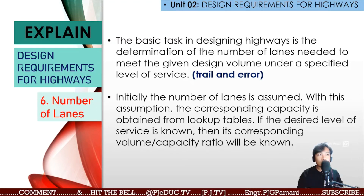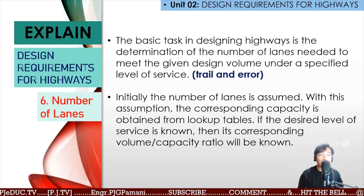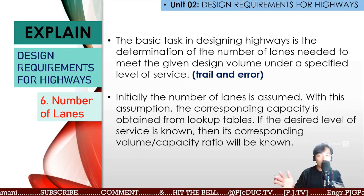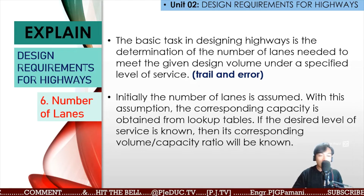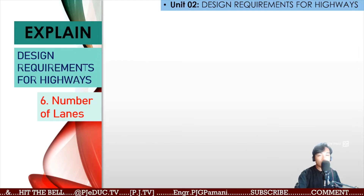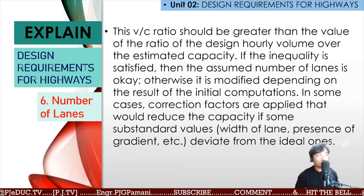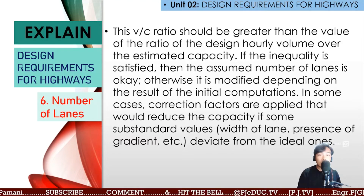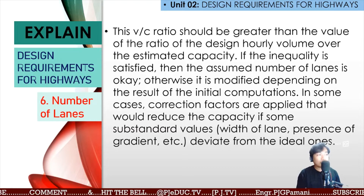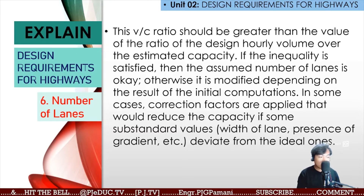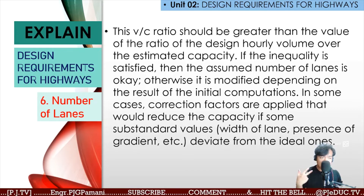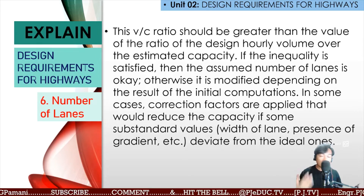We determine how many vehicles can pass on that road — your volume-capacity ratio — how many can pass within a specific day, within an hour (vehicle per hour or vehicle per day). The volume-capacity ratio should be greater than the ratio of the design hourly volume (DDHV or DHV) over the estimated capacity. Estimated capacity is the standard value for two-lane two-way, four-lane two-way, six-lane two-way, found in the applicable table.